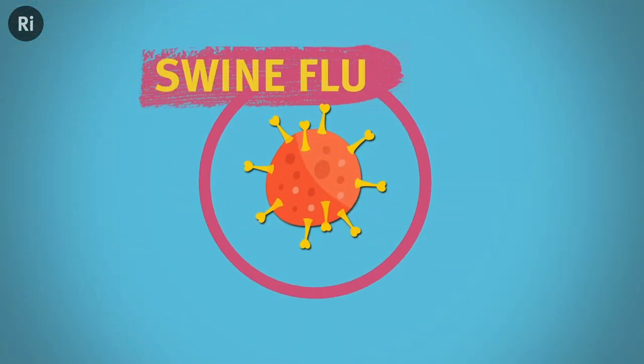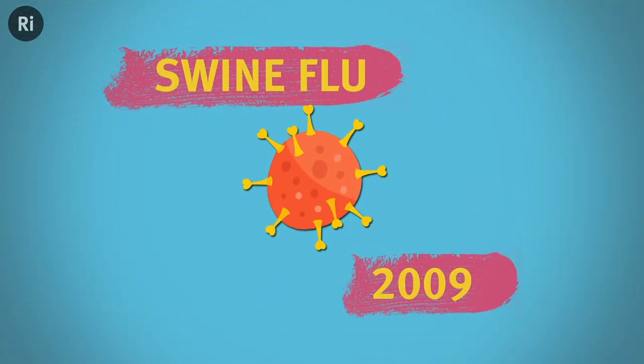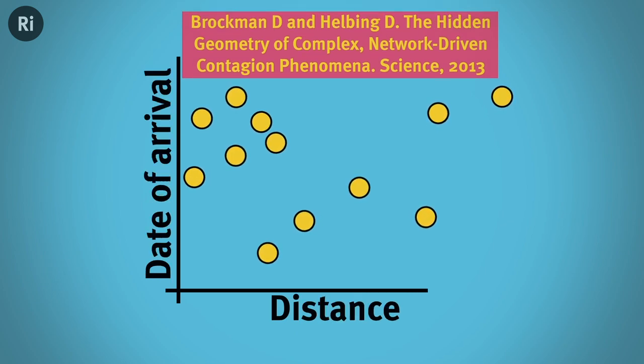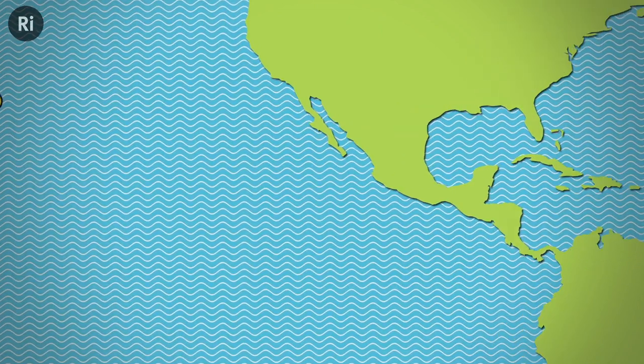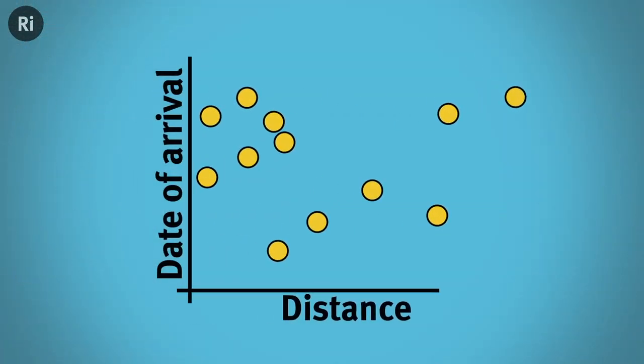If we look at the swine flu pandemic of 2009, when date of arrival in a country is plotted against geographic distance from the start of the pandemic in Mexico, you can see there isn't much of a pattern.